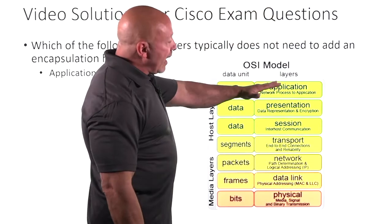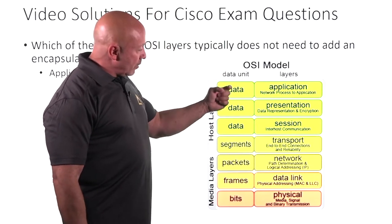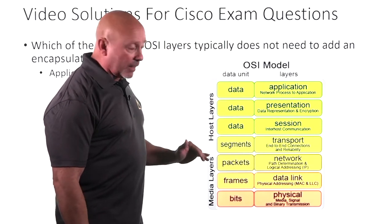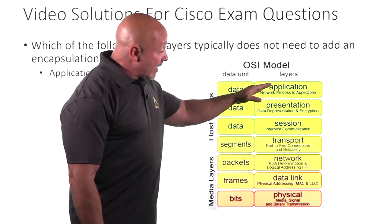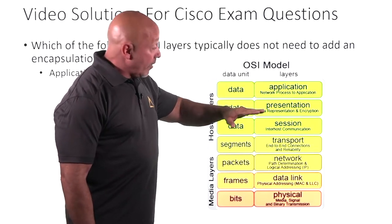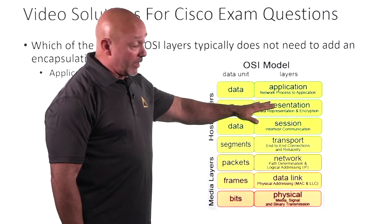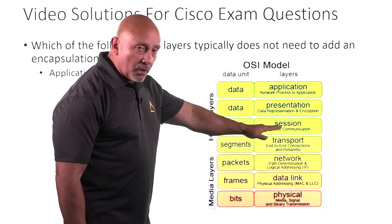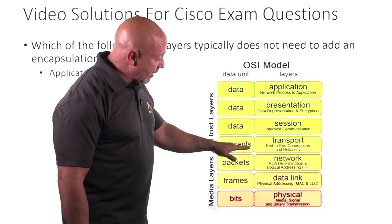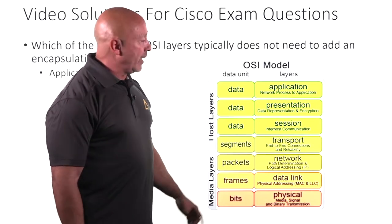Look at your OSI model — it's going down. The upper three layers are simply data, data, data. This is not going to add anything. The lower layers will add information, and once you get down there, they'll be putting in their header information.